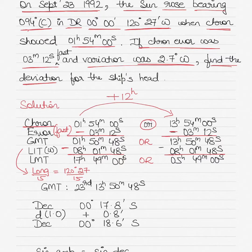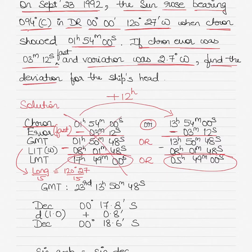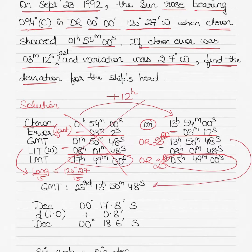The two possible LMTs are 17 hours 49 minutes 00 seconds and 5 hours 49 minutes 00 seconds. Since the question states the sun was rising, the local time must be morning, so 17h 49m is eliminated. With the correct LMT being 05h 49m on 23rd September — which is 8 hours behind 1300 GMT — the correct GMT is 23rd September, 13 hours 50 minutes 48 seconds.